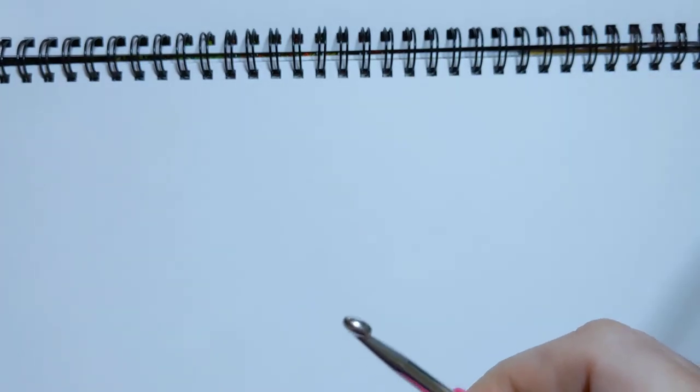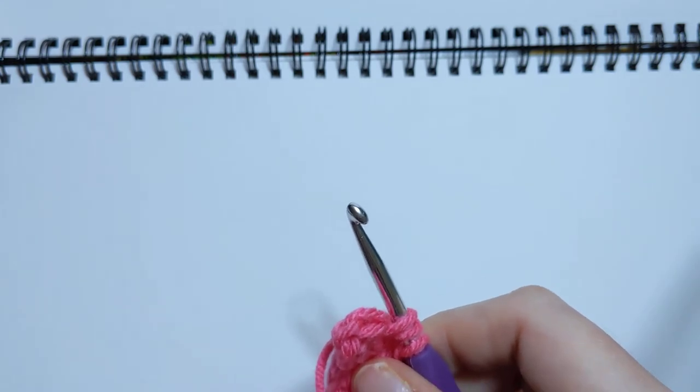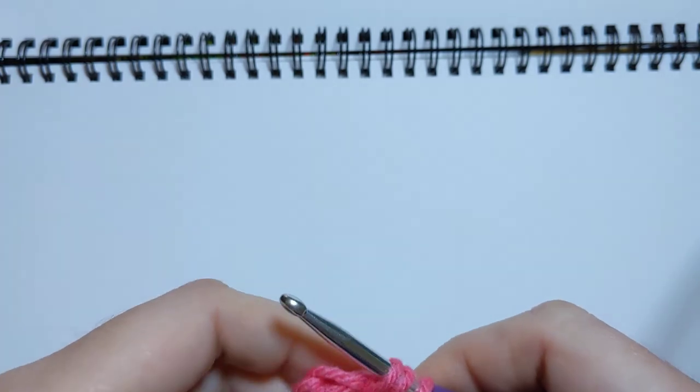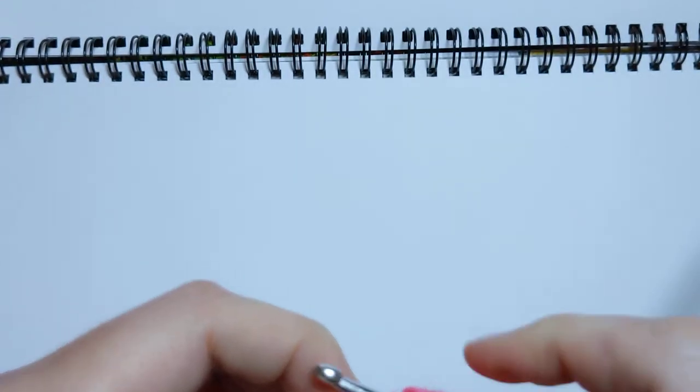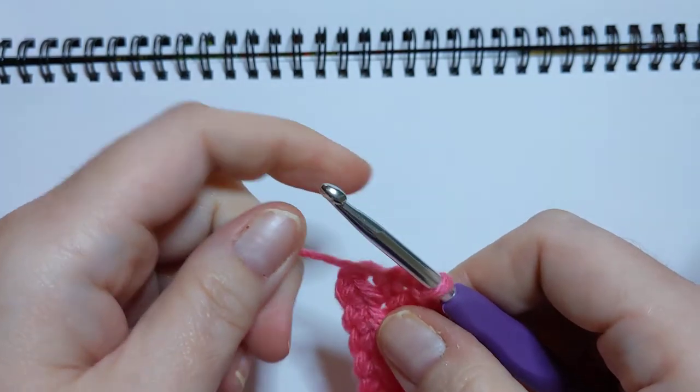And I think I'm using a hook size that's too small for this yarn, not by design, but just because it's what I grabbed off my table. So yeah, the stitches are a little bit tight. Okay, here's our final stitch. Pull up, yarn over, pull through all three on the hook.